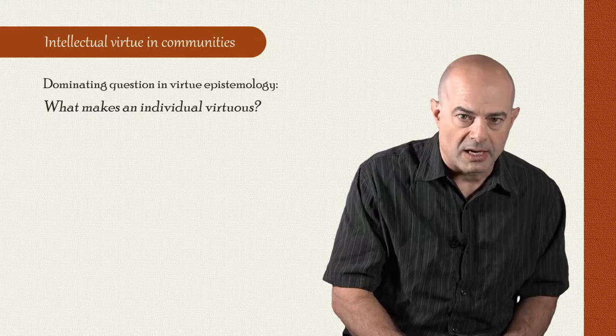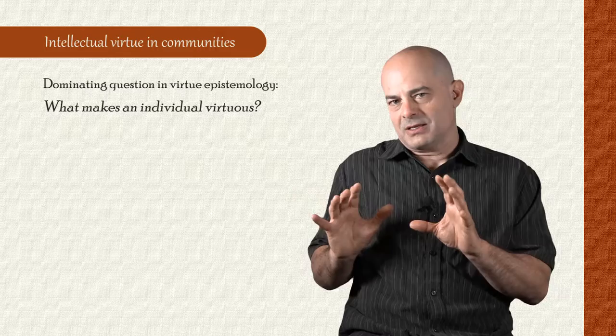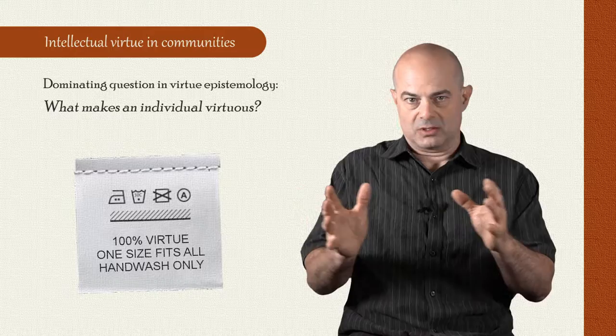And the implicit assumption behind that question is a kind of one model fits all assumption. So when you ask what does a virtuous person look like? The implicit assumption maybe is that all virtuous persons are going to look the same.